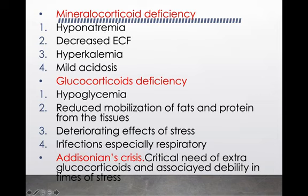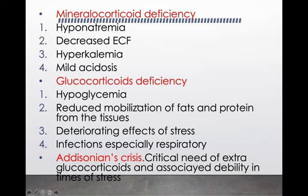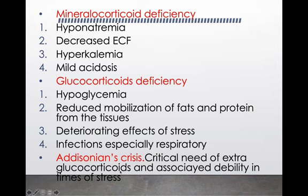There is a condition associated with Addison disease known as Addisonian crisis — the critical need for extra glucocorticoid and associated debility in times of stress. At the time of stress, the body needs more energy, which it normally gets through cortisol by mobilization of fats and proteins. But with less cortisol, the body won't be able to cope with stress. This is the Addisonian crisis — the body cannot provide extra glucocorticoid because of Addison disease.